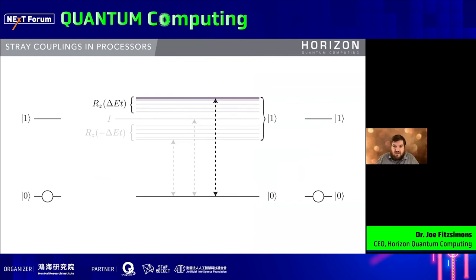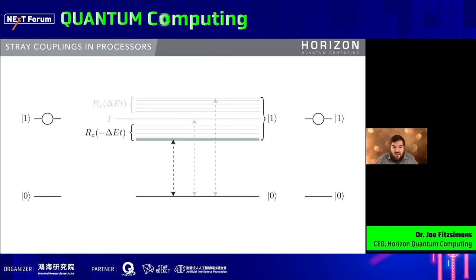One area we've focused on in particular is characterizing stray couplings within devices. In superconducting processors, for example, you have ZZ couplings between different qubits that aren't supposed to be there and that manufacturers aren't necessarily aware of. The effect is problematic: when a neighboring qubit couples to the qubit you care about, the energy level shifts depending on whether the neighbor is in zero or one. This means the rate at which the qubit picks up phase also changes, so its effective frequency is affected by the state of its neighbors.